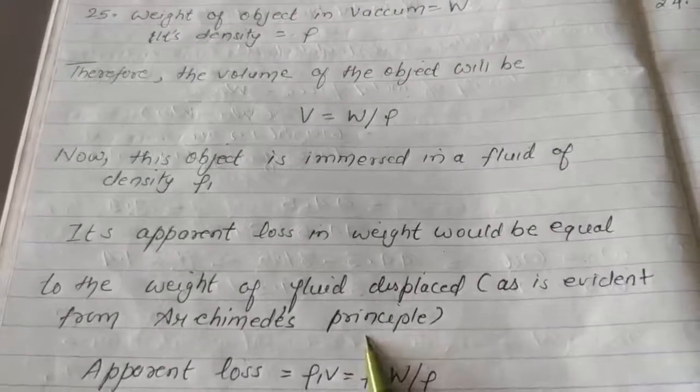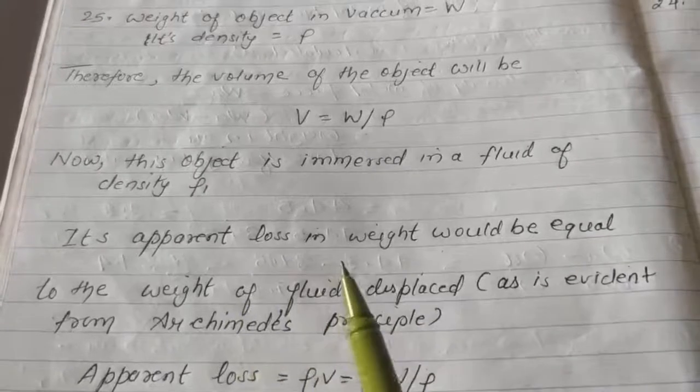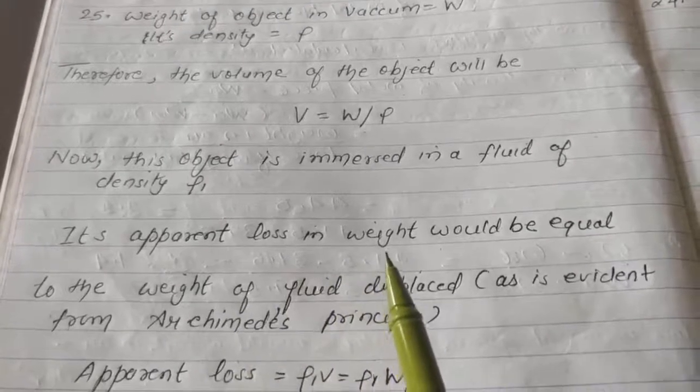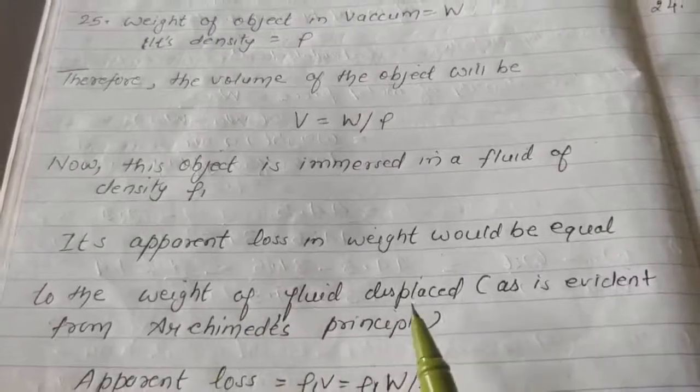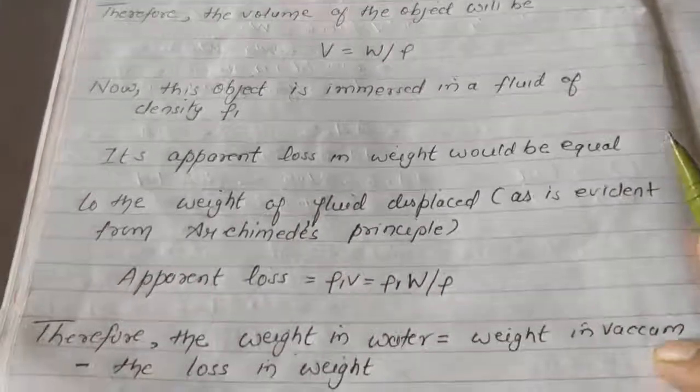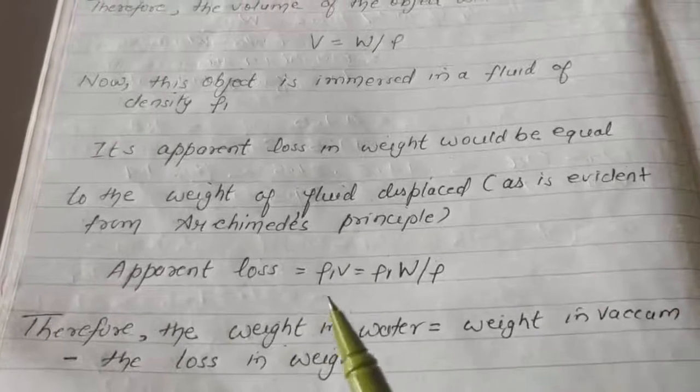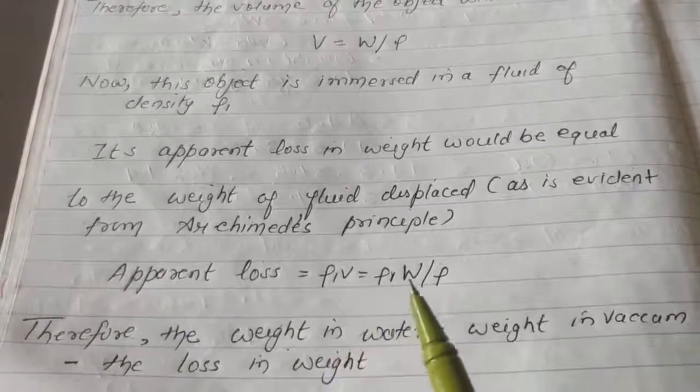Its apparent loss in weight would be equal to the weight of the fluid displaced. According to Archimedes principle, the apparent weight loss of any object is equal to how much fluid it displaces. So, apparent loss is equal to rho l V is equal to rho l W by rho.